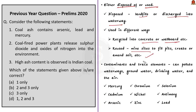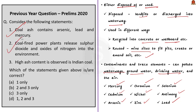Coal ash contains contaminants like mercury, cadmium, arsenic, chromium, nickel, zinc, selenium, antimony, and lead. If not recycled or reused, these contaminants pollute waterways, groundwater, drinking water, and air. That is why coal ash disposal and use is regulated in many countries. Looking at the question: Statement 1 — coal ash contains arsenic, lead and mercury — correct. Statement 2 — coal-fired power plants release sulfur dioxide and oxides of nitrogen — correct. Statement 3 — high ash content is observed in Indian coal — correct. The correct answer is option D, 1, 2 and 3.